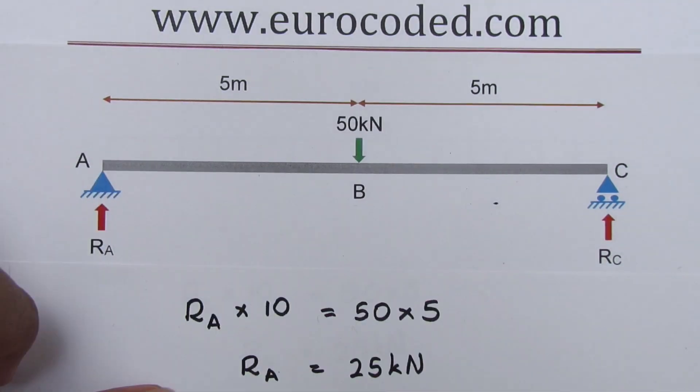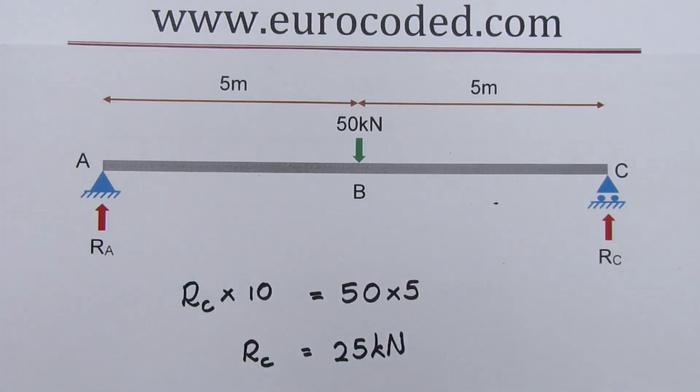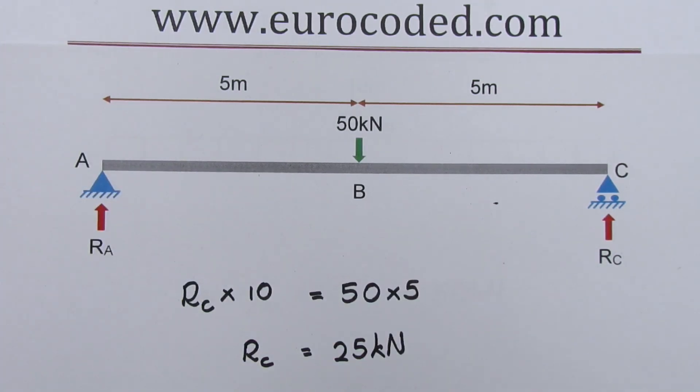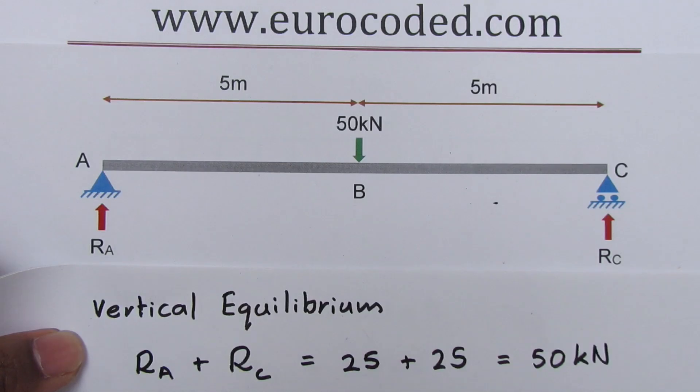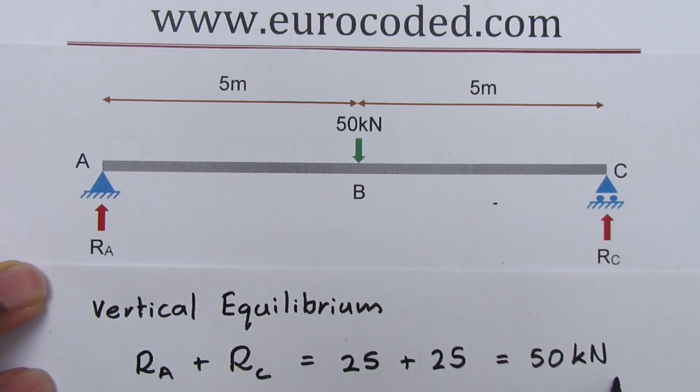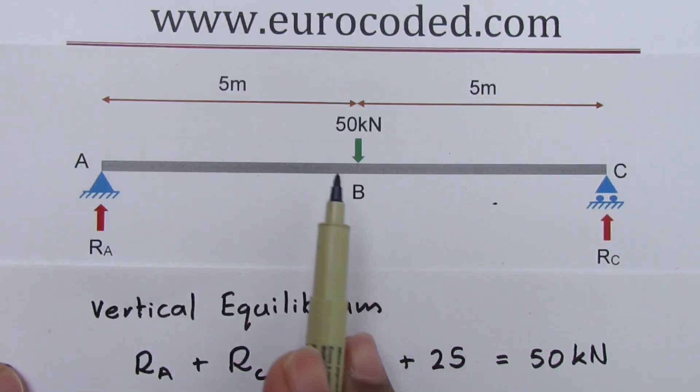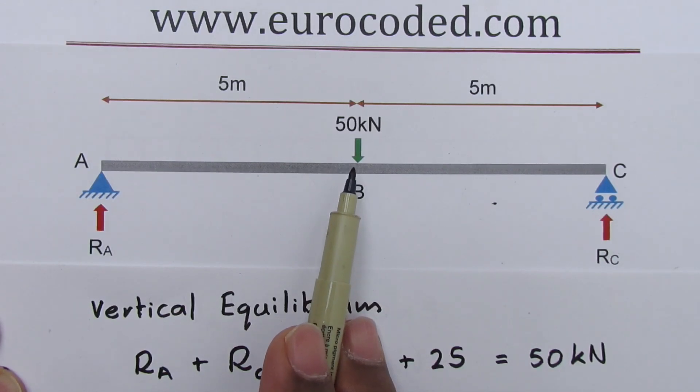We know from our calculations that RA is equal to 25 kilonewtons and RC is equal to 25 kilonewtons. Therefore RA plus RC is equal to 25 plus 25 which is equal to 50 kilonewtons. And that is exactly what we have as our externally applied force, 50 kilonewtons.